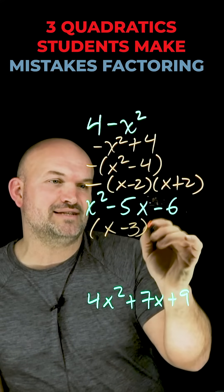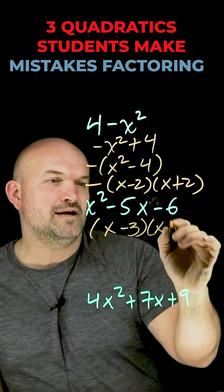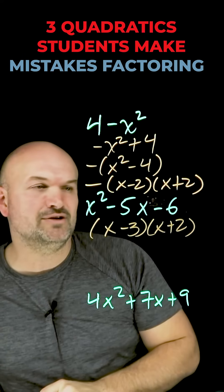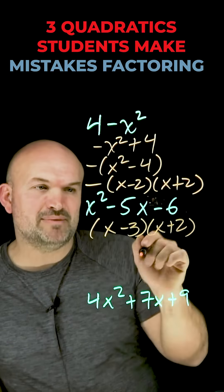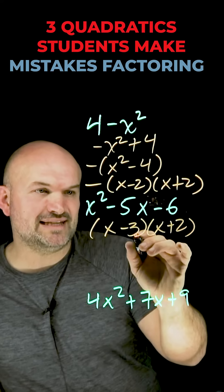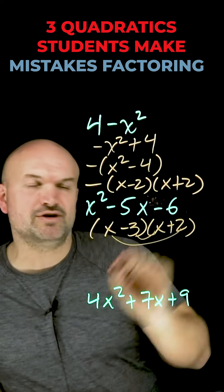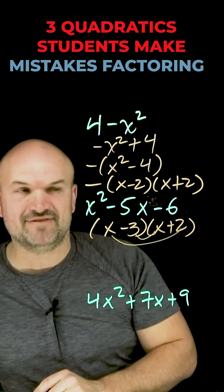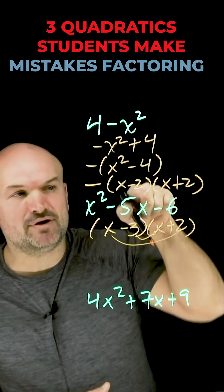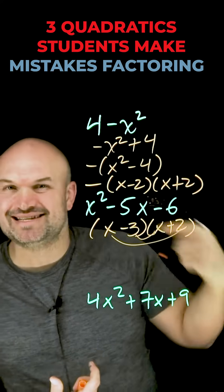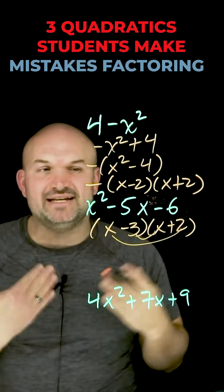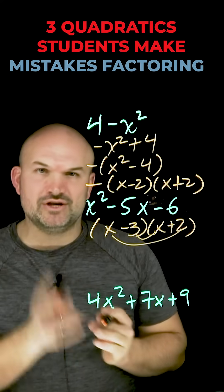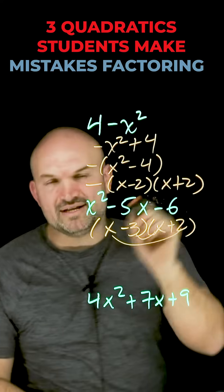So they say that's (x minus 3)(x plus 2), since one has to be negative to give a negative 6. The problem is when you combine these: negative 3x plus 2x gives you negative 1x, not negative 5x. What we need to understand is: whenever the last number is negative, you're thinking about the difference between the two factors, not the sum.